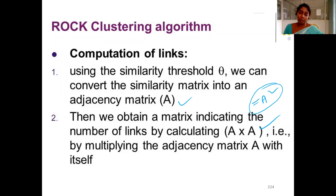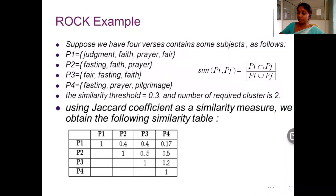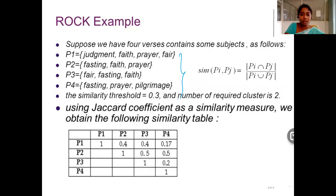For computation of the links, we first need to calculate the similarity matrix. From that similarity matrix, we calculate the adjacency matrix. After generating the adjacency matrix, we square it to get the link matrix. Here you can go with this example — you have some records, and from those records you can generate the similarity matrix based on the Jaccard coefficient.